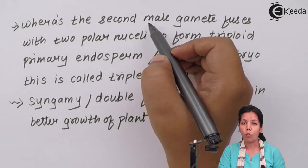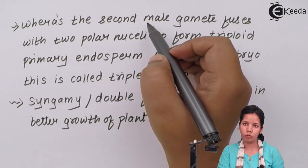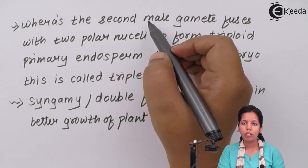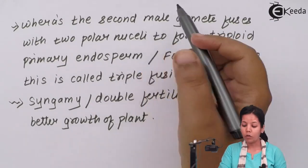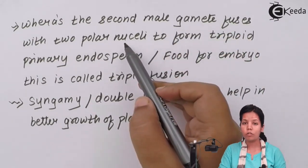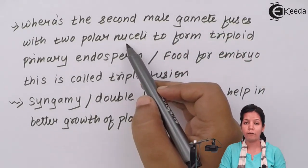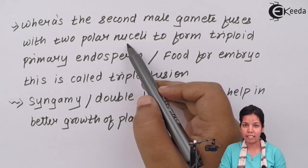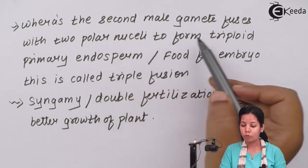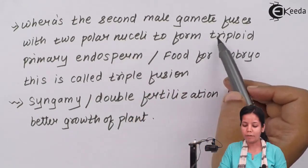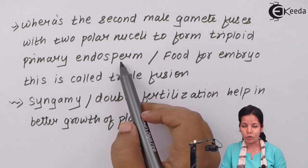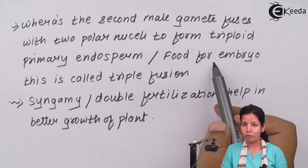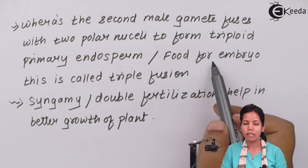During double fertilization, one male gamete fuses with the egg to form the zygote or seed, whereas the second male gamete fuses with the two polar nuclei together — forming three different nuclei — to form a triploid primary endosperm, which in simple language is the seed coat, and this serves as food for the growing embryo or seed.